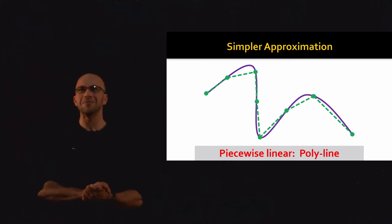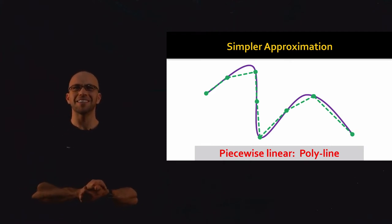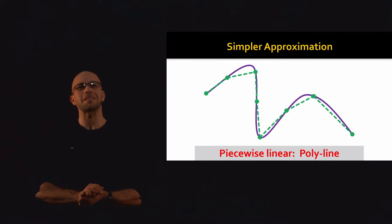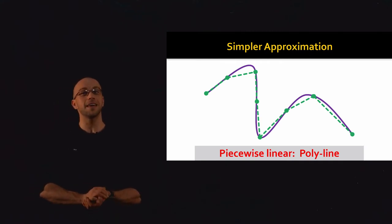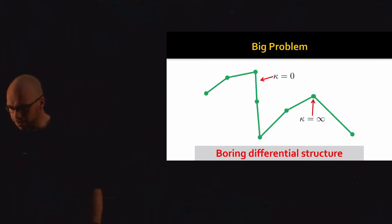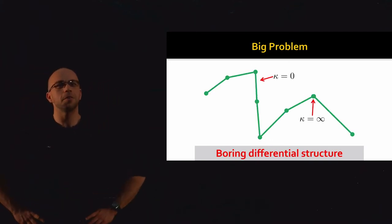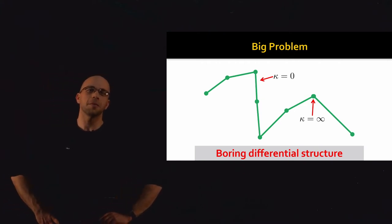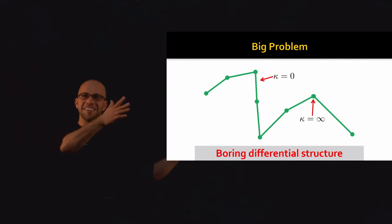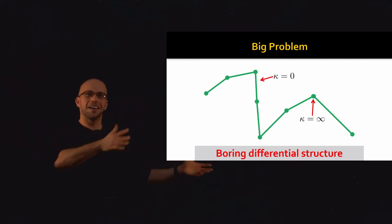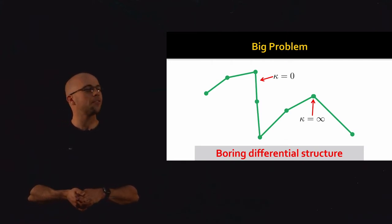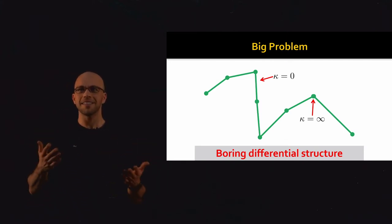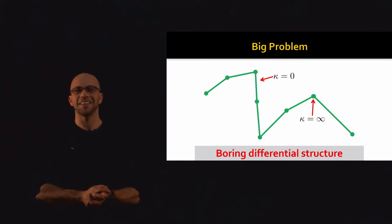Our task today is to define notions like curvature, arc length, and so on based on just having this long chain of points. Arc length is the easy one we can all agree on: the arc length of a polyline is just the sum of the lengths of the line segments. But when we start talking about differential structures, we get into trouble. If we go back to the formulas from our previous lecture and compute the curvature of a polyline, along each line segment the curvature is 0 — straight lines are flat.